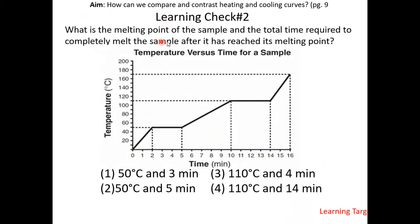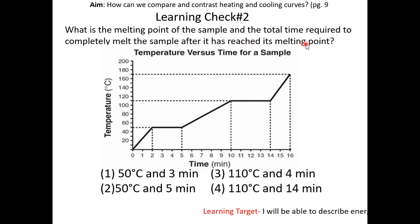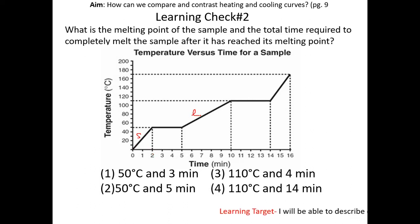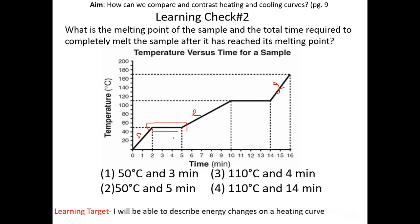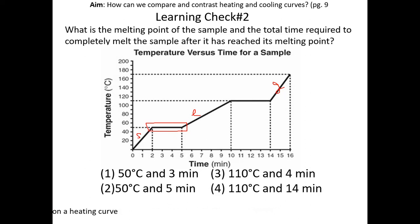Learning check number 2: what is the melting point of the sample and the total time required to completely melt the sample after it reaches its melting point? The first step is to label the heating curve — solid, liquid, and gas. Melting is going from solid to liquid, so this is the melting phase. The temperature at which melting occurs is the melting point, which is 50 degrees Celsius. The time it takes to melt the sample is 3 minutes (5 minus 2). The answer is choice 1.